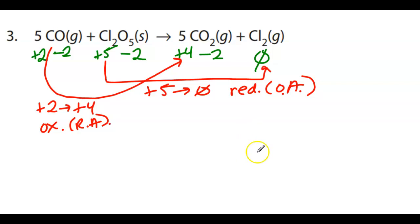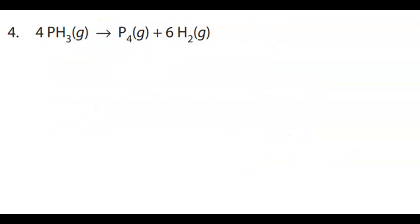Okay, so technically, if we want to be technical, right, the reducing agent would have to be the entire thing, right? Because it's not one ion, it's in a molecule. Oxidizing agent, it would be Cl2O5. Okay, so if you're looking at the answer key and it's seeing the whole thing that it's in, that makes sense.